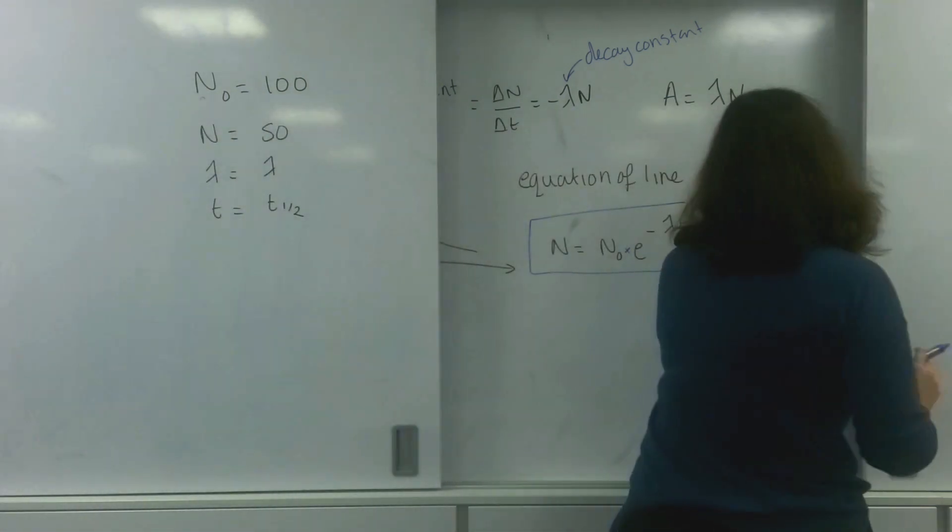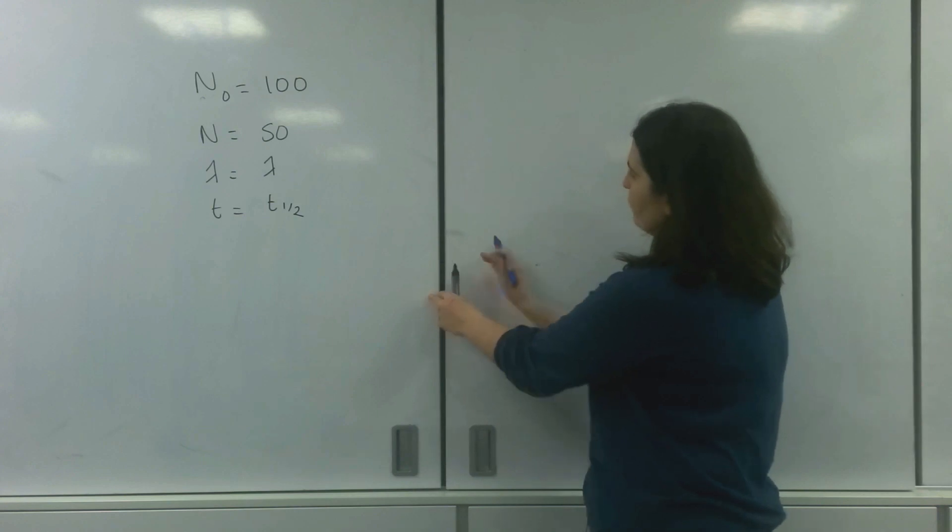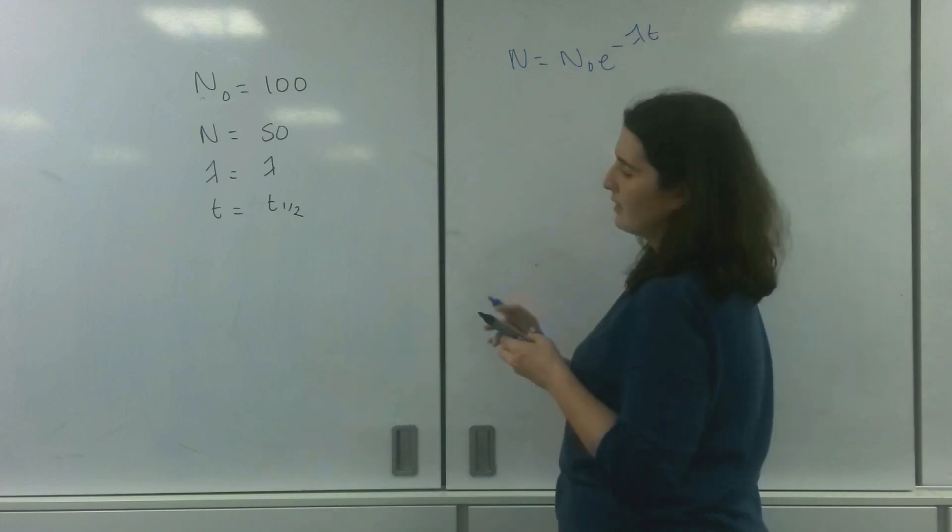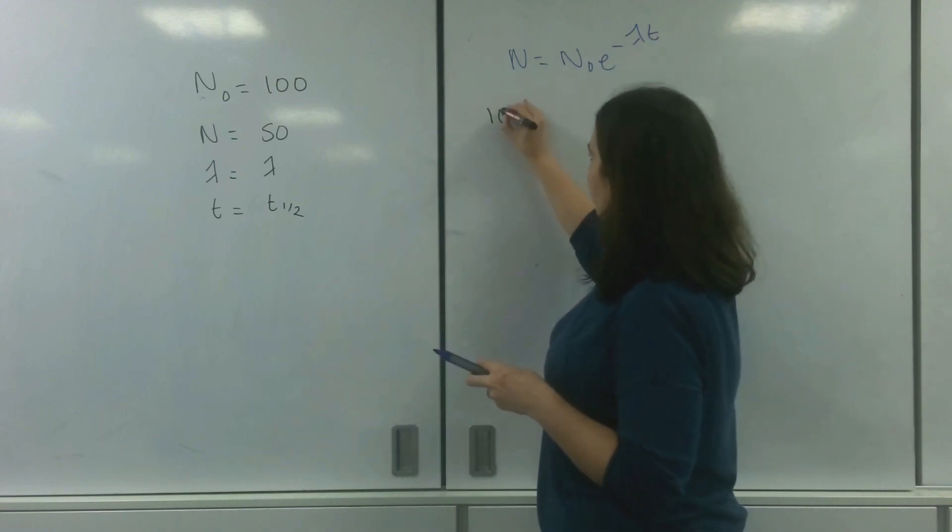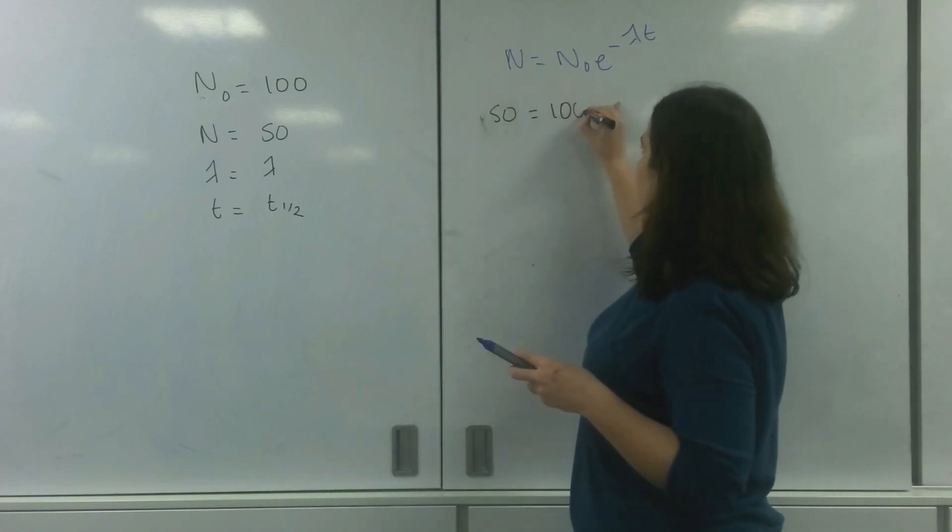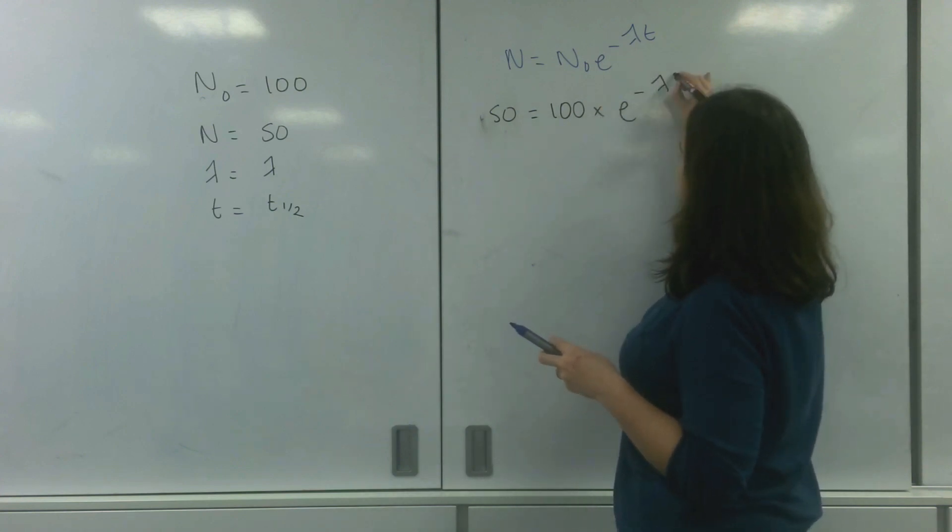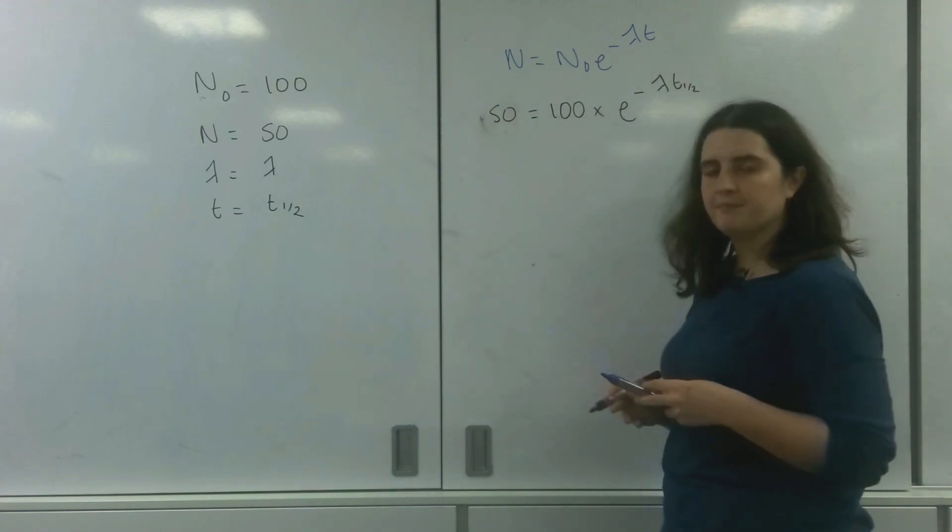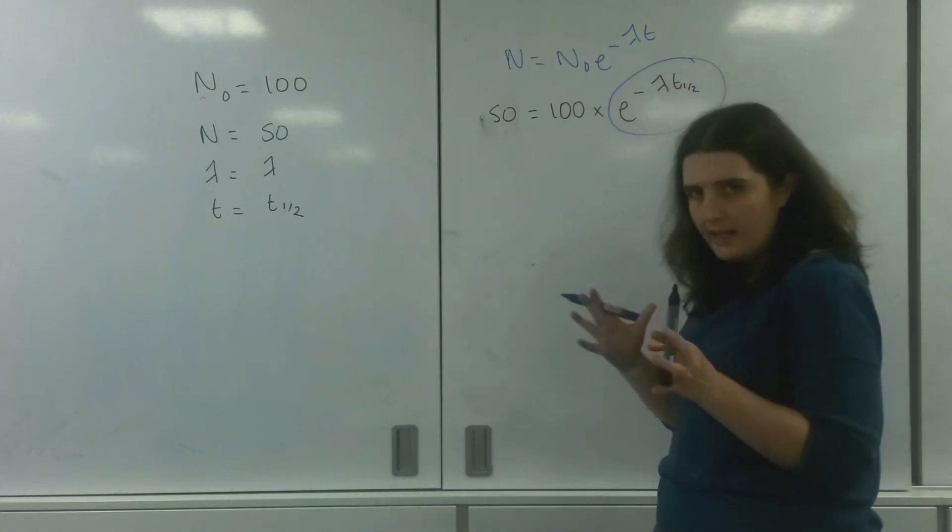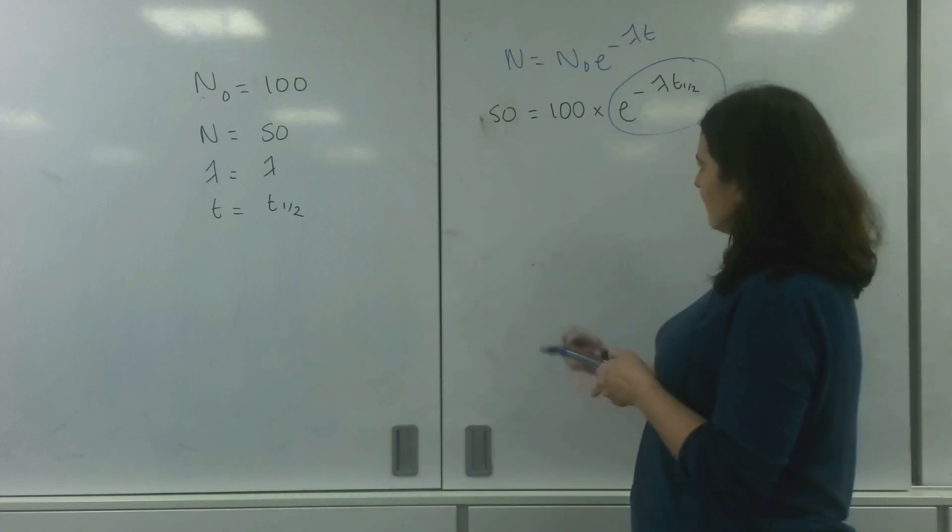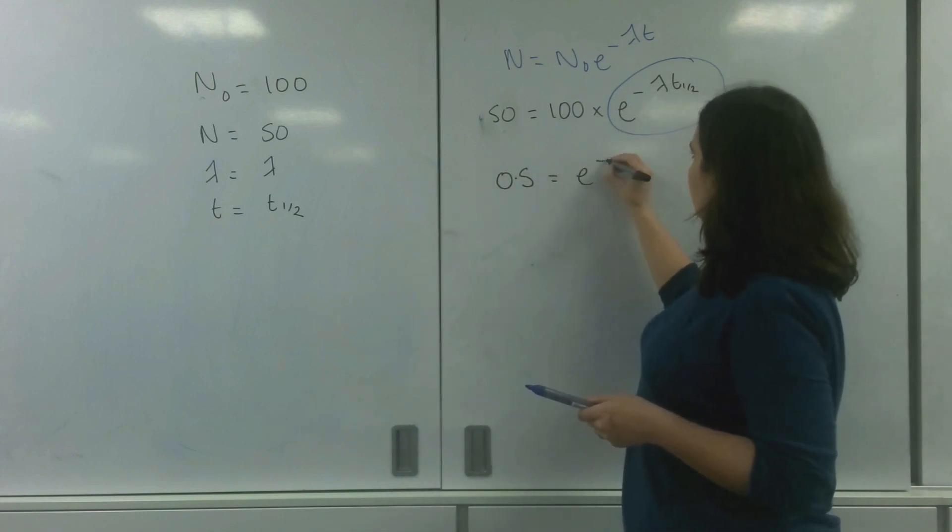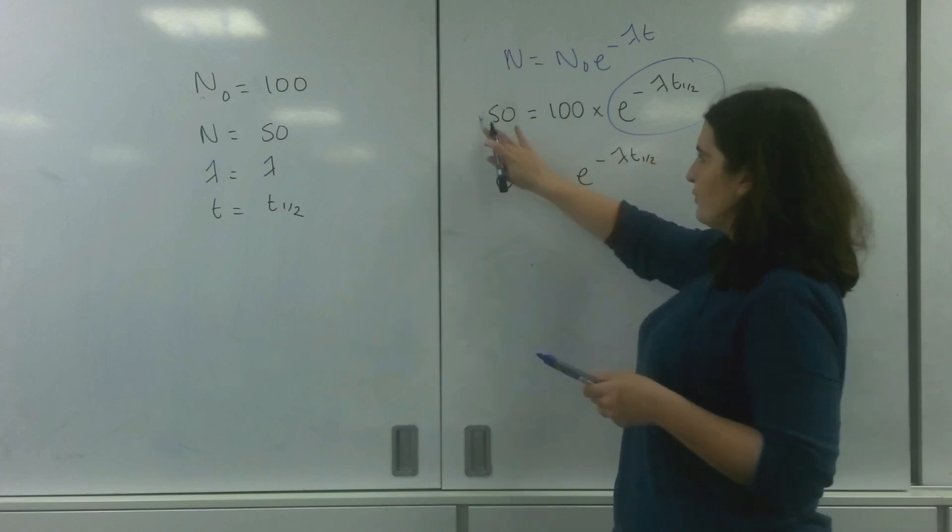So putting this into my formula. The formula is N equals N₀ e to the minus lambda t. I'm going to put these values in. 50 equals 100 times e to the minus lambda t_1/2. Okay, so first of all, I must get this on its own. I can't do any weird logarithm things until it's on its own. So 50 divided by 100 is 0.5.